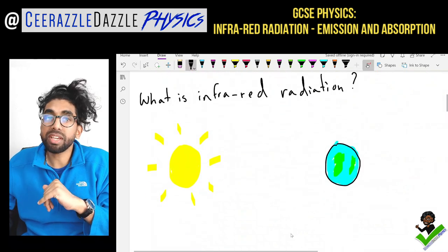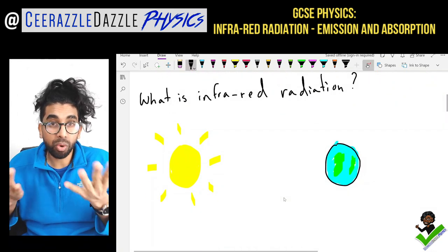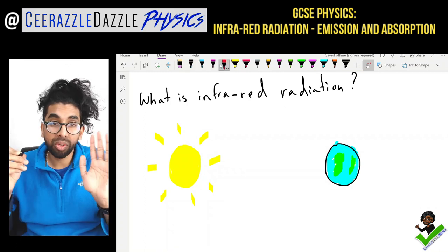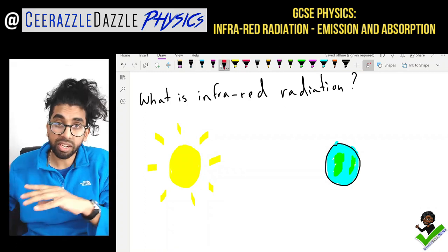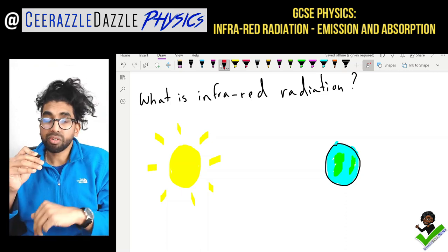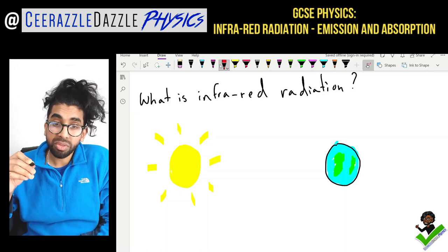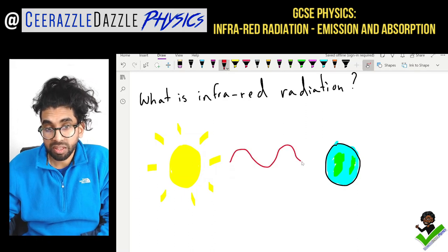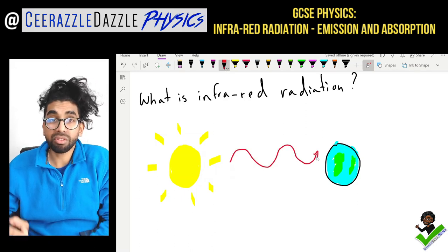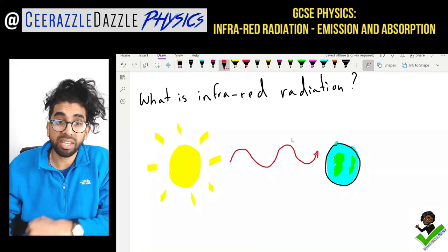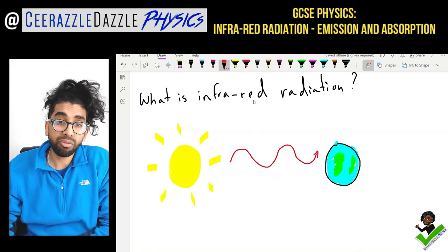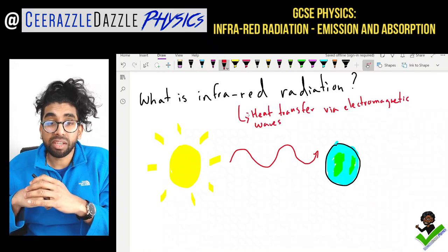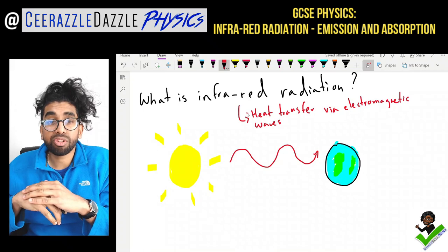So first question is: what exactly is infrared radiation? Well, look at the following scenario. We've got the Sun on the left hand side and the Earth on the right hand side. Heat is transferred from the Sun to the Earth via waves. This is called infrared radiation — it's simply heat transfer via electromagnetic waves.